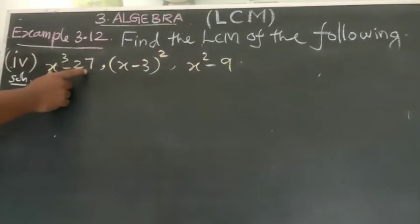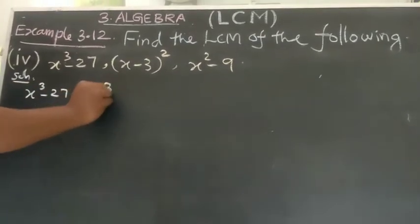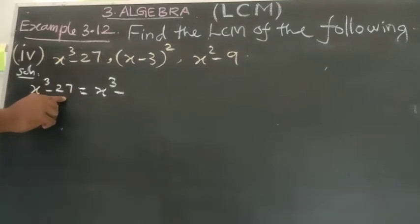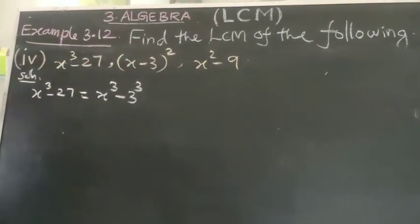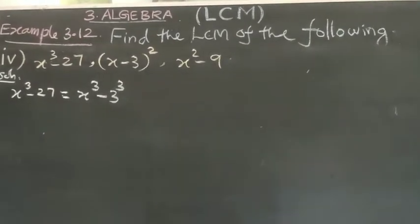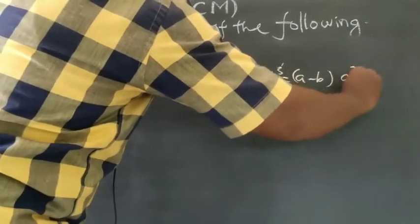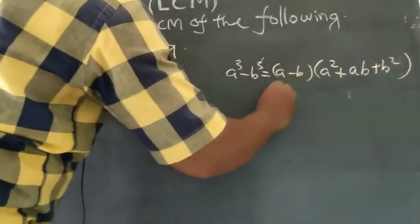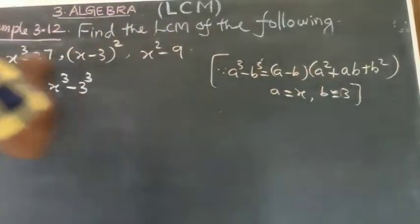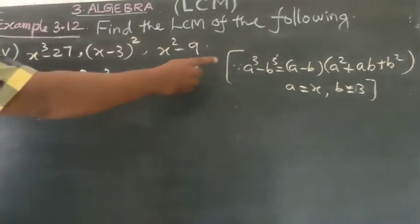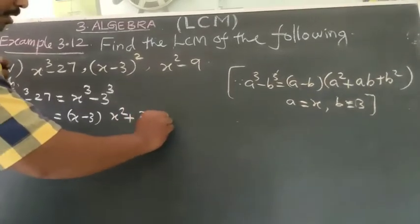First, factor X cubed minus 27. That equals X cubed minus 3 cubed, which is in the form A cubed minus B cubed. The formula: A cubed minus B cubed equals A minus B, times A squared plus AB plus B squared, where A equals X and B equals 3.